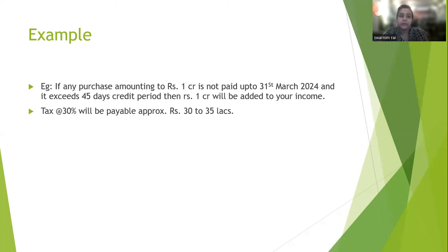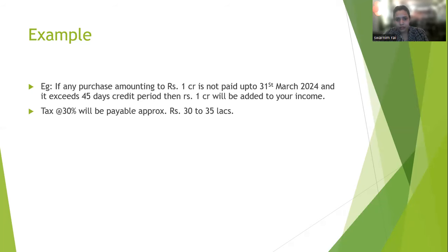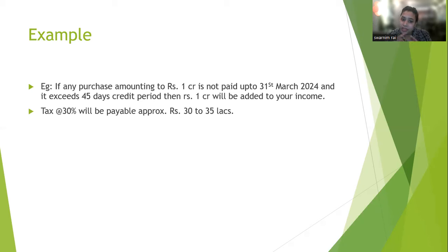Let's look at one example. If you have purchased 1 crore from an MSME enterprise, the credit period of 45 days has been exceeded and it is outstanding on March 31st, 2024 with no payment made — that 1 crore will be treated as income. At the maximum income tax rate of 30%, the tax will be approximately 32–35 lakhs. So you can see how significantly this will affect a business.